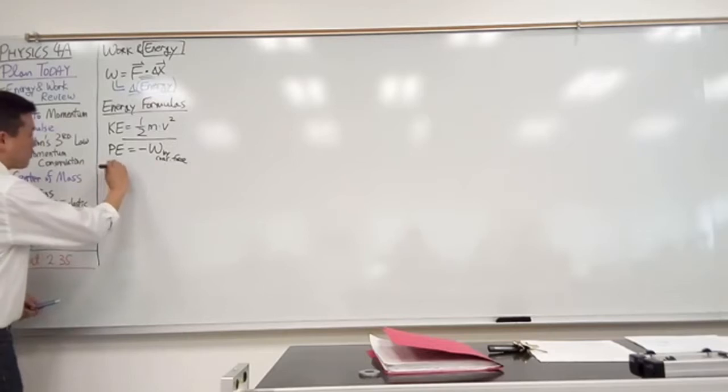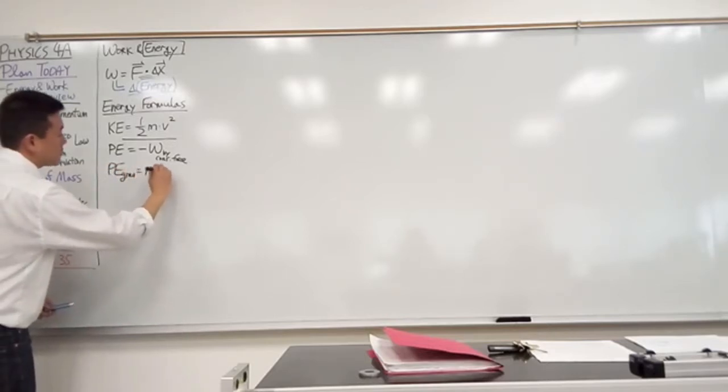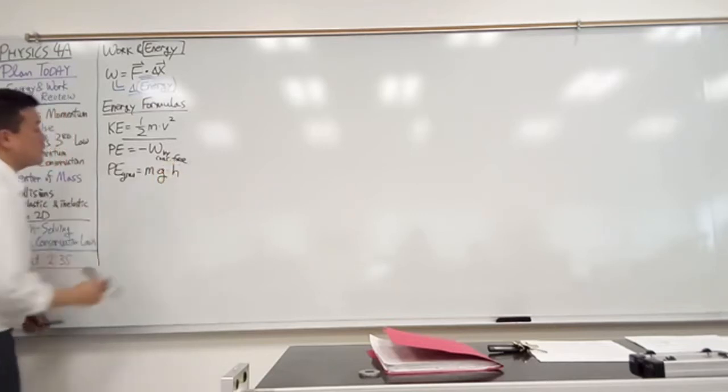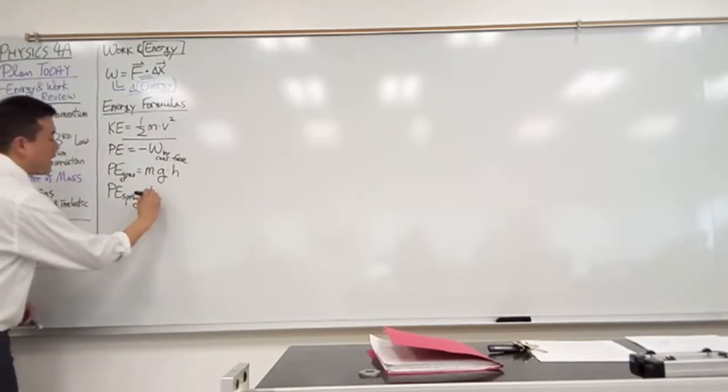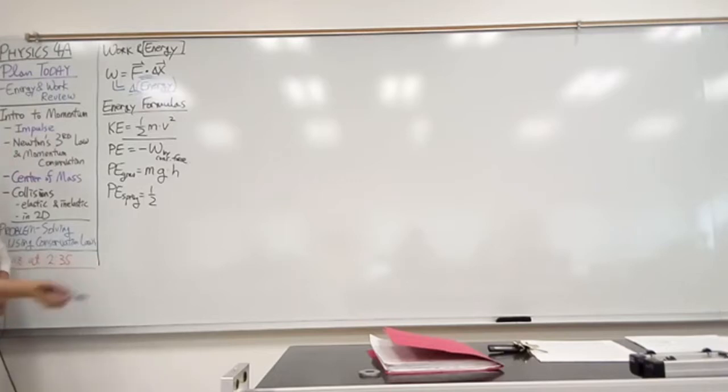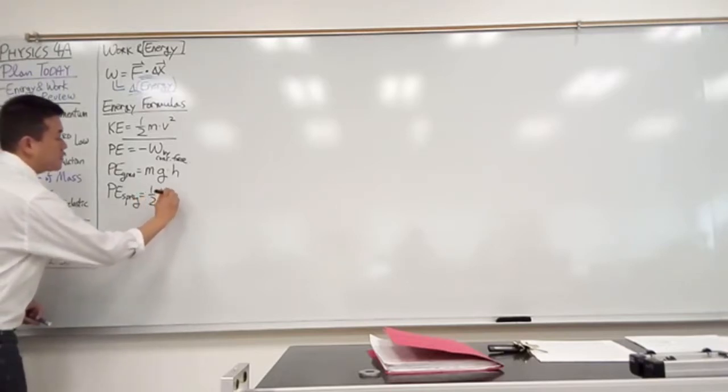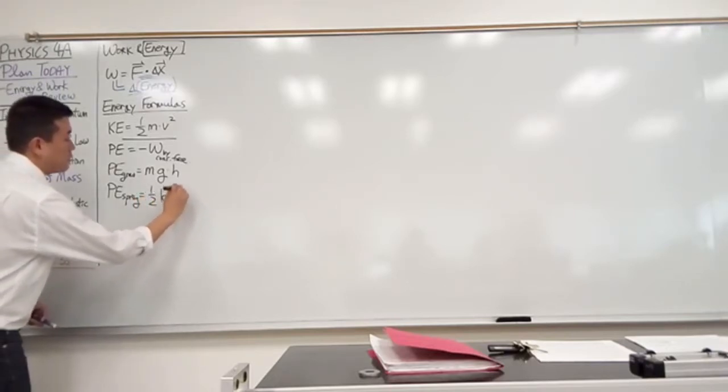So we derived the two potential energy formulas starting with this. That was gravitational potential energy equal to mass times g times h or change in height. And spring potential energy given by one half times the spring constant k times some displacement from equilibrium squared.